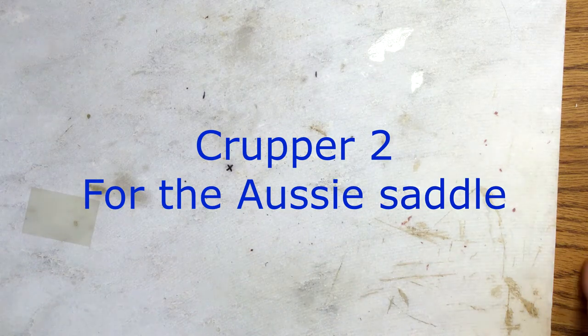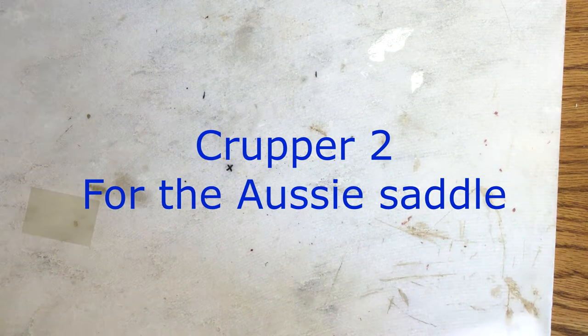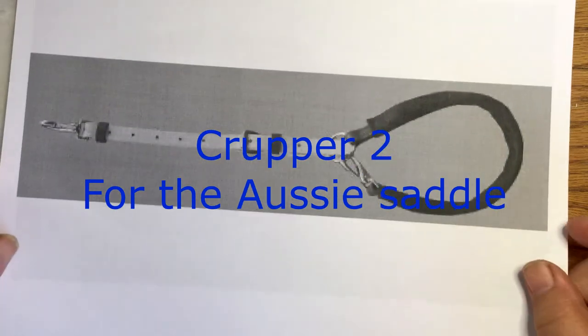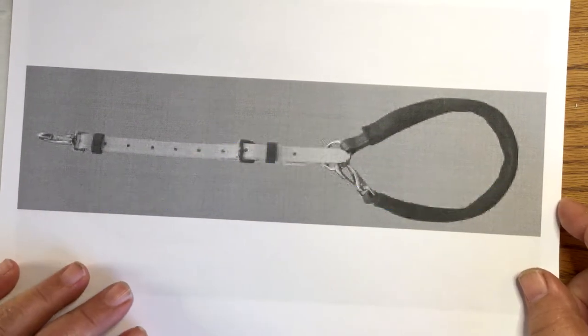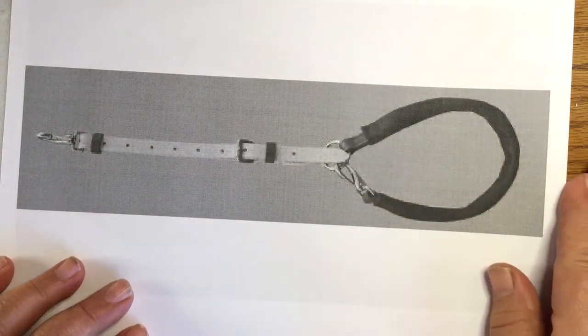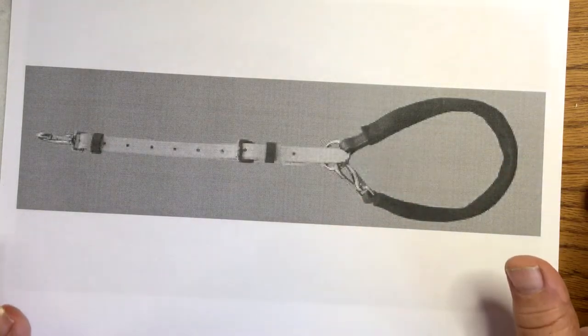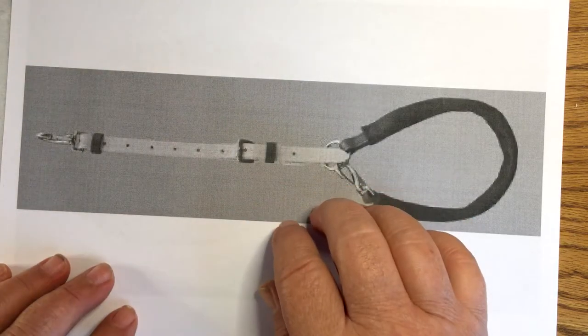Welcome to Model Horse Tack School. My name is Carrie and today we're gonna make a crupper for the Australian stock saddle set. Now this is more of a saddle type crupper, not a harness type. You'll notice if you've seen cruppers this one is a little different.